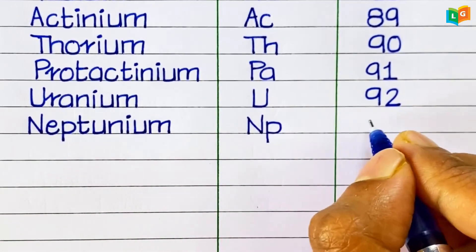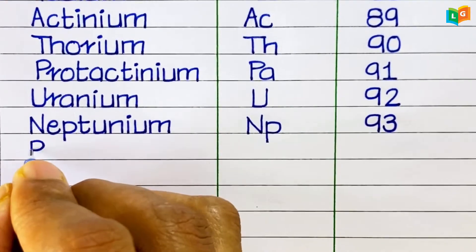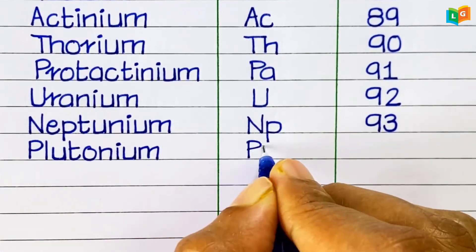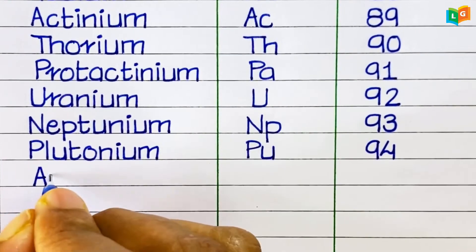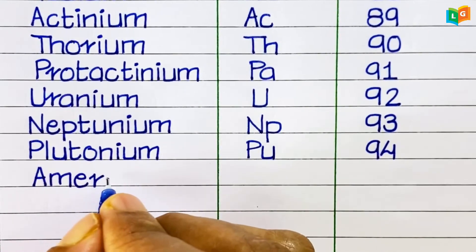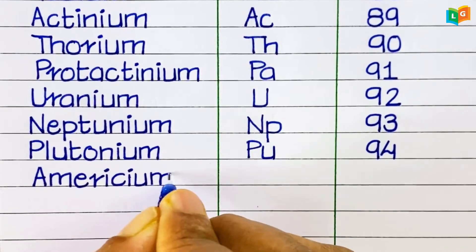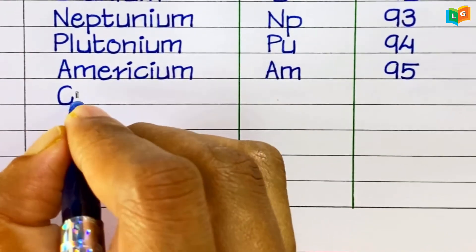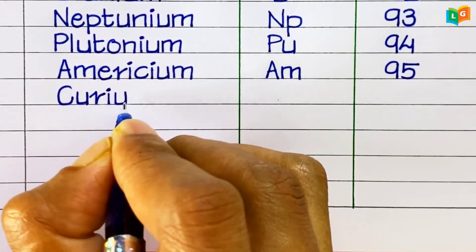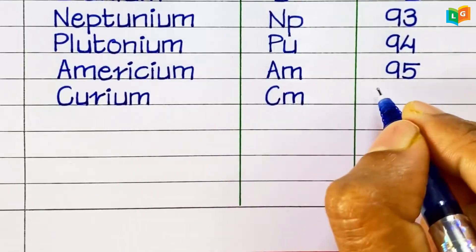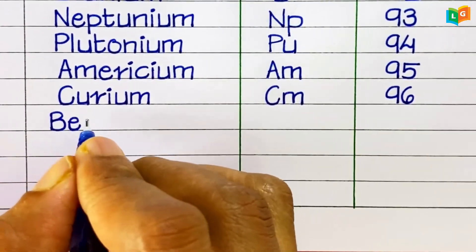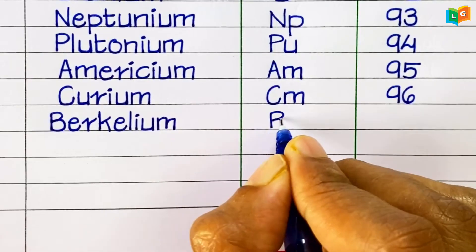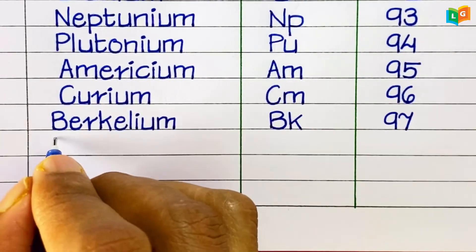Neptunium, symbol Np, atomic number 93. Plutonium, symbol Pu, atomic number 94. Americium, symbol Am, atomic number 95. Berkelium, symbol Bk, atomic number 97.